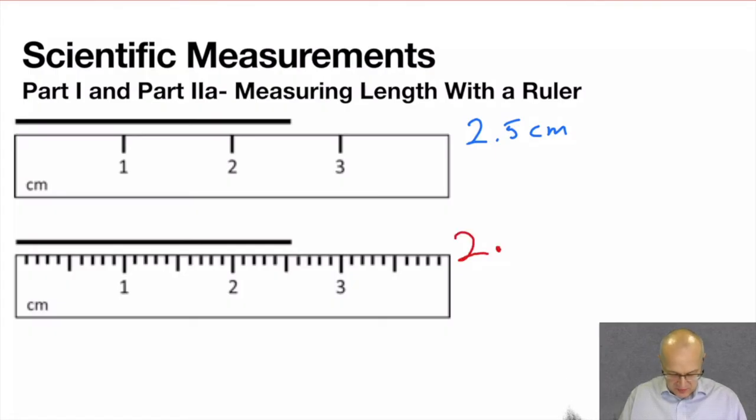So on this ruler we can see the tick marks, right? They're right here. So this line appears to be a little bit greater than 2.5, a little bit less than 2.6. So I can put 2.5 centimeters.